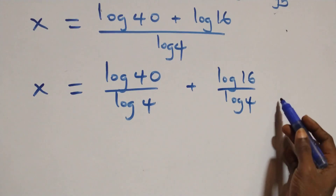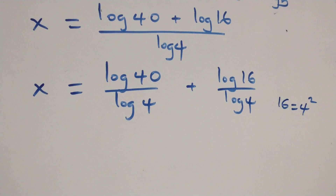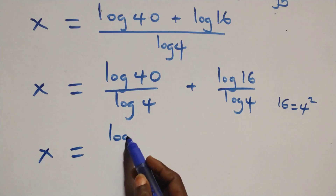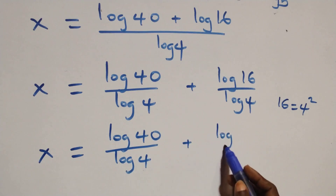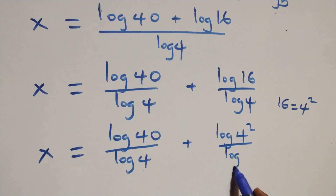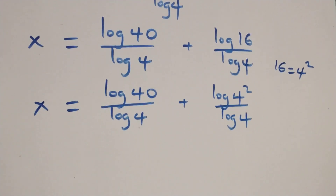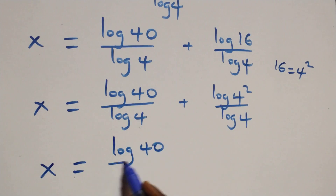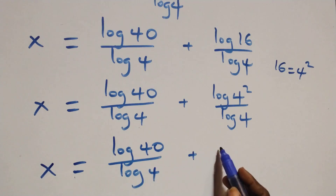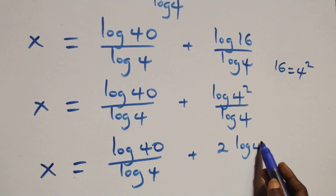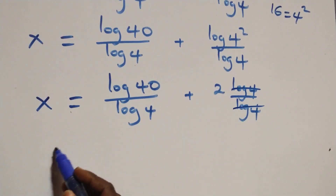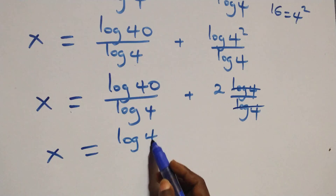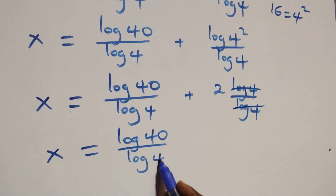Also from here, 16 is 4 times 4, that is 4 squared. So what we have becomes x equals to log 40 over log 4 plus log(4 squared) over log 4. Applying the power log rule, the 2 comes down and log 4 cancels each other, giving us x equals to log 40 over log 4 plus 2.